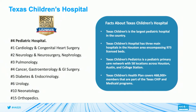Before we get started, let me tell you a little bit about Texas Children's. We have three main hospitals in the Houston area with more than 900 beds, making us the largest pediatric hospital in the country. We also have a large pediatric primary care network with more than 50 locations across the Houston, Austin, and College Station areas. Between the hospital and our primary care practices, we have more than 14,000 faculty and staff. In addition to patient care, we also have a health plan covering more than 460,000 members in the Texas CHIP and Medicaid programs. On the left side of this slide, you can also see our latest U.S. News and World Report rankings.